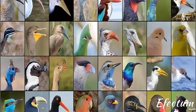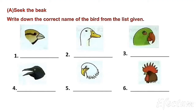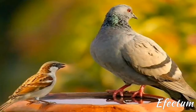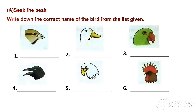Take out your GK book and open page number 17. See the first picture. This bird has a short beak — crushing beaks. Sparrows and pigeons have short hard beaks to crack grains and seeds. So the answer is sparrow.